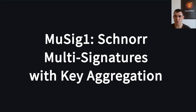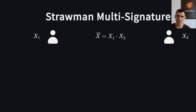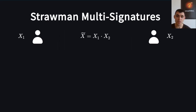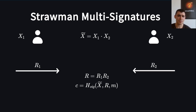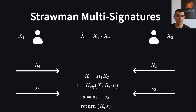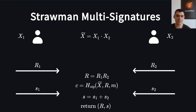Now let's look at MuSig1, Schnorr multi-signatures with key aggregation. Conceptually, it's straightforward to construct correct but insecure multi-signatures from Schnorr signatures. Assume for simplicity two signers, each with a secret and a public key. We can multiply the public keys to create an aggregate public key and similarly multiply the nonces. If the signers create partial signatures S1 and S2 for the same message, then the sum S of the partial signatures and the product R of nonces is a valid Schnorr signature for the aggregate public key.